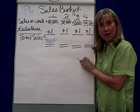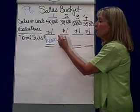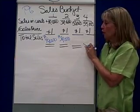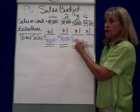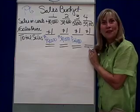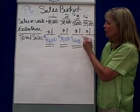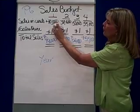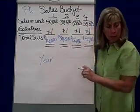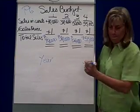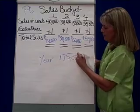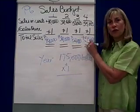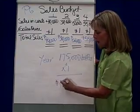Sales for the second quarter are 30,000 bottles of water times a dollar selling price, so that would be $30,000. In quarter three, we think we're going to sell 50,000 bottles of water at a dollar, so that would be $50,000 of total sales revenue. And finally, in quarter four, 55,000 bottles of water at a dollar a piece, or $55,000. So in total for the year, we're going to sell 40 plus 30 plus 50 plus 55 — that's 175,000 bottles of water at a dollar a piece.